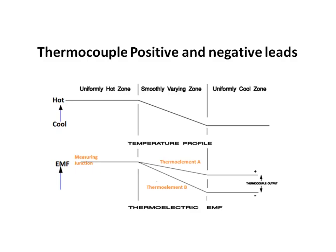In a thermocouple, thermoelement A generates an EMF depending on its Seebeck coefficient, and thermoelement B generates another EMF depending on its Seebeck coefficient. The thermocouple output is the EMF measured between these two thermoelements. For the best thermocouple performance, thermoelement A should have the highest positive Seebeck coefficient and thermoelement B should have the highest negative Seebeck coefficient.